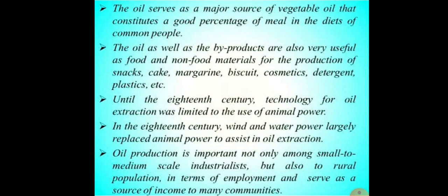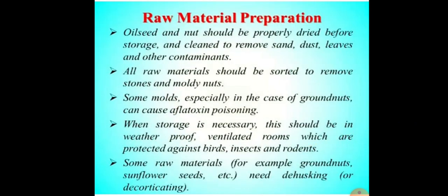This is all about a small introduction regarding the oil extraction process. Now we will go for the actual process of oil extraction. First, there is raw material preparation. The oilseeds and nuts should be properly dried before storage and cleaned to remove sand, dust, leaves, and other contaminants. All raw materials should be sorted to remove stones and moldy nuts. Some molds, especially in the case of groundnuts, can cause aflatoxin poisoning. When storage is necessary, they should be in weatherproof ventilated rooms protected against birds, insects, and rodents. Some raw materials, for example groundnuts and sunflower seeds, need dehusking or decorticating.